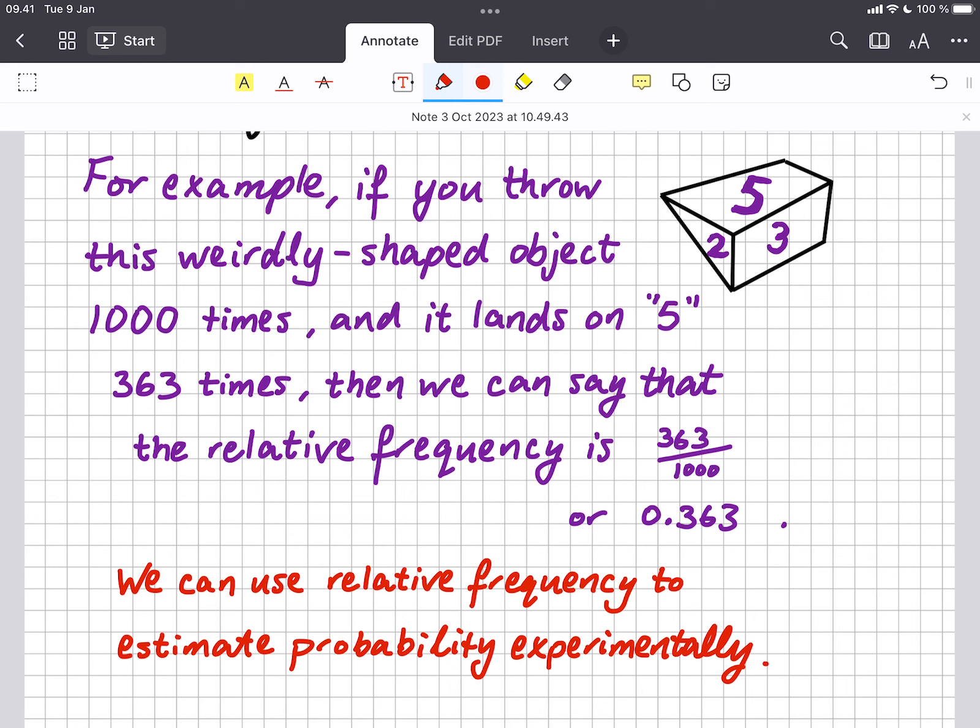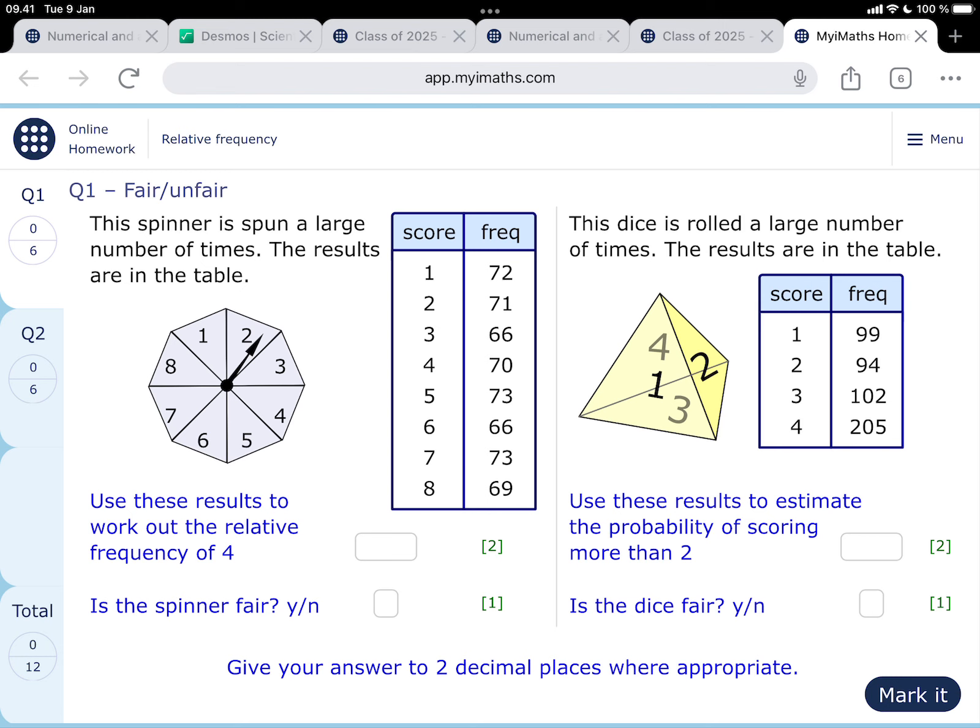Okay, we're going to look at some MyMaths exercises now. We're going to look at the MyMaths exercise called relative frequency and it says question one, fair unfair. The spinner is spun a large number of times, the results are in the table.